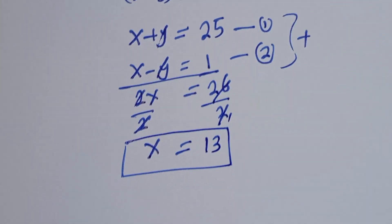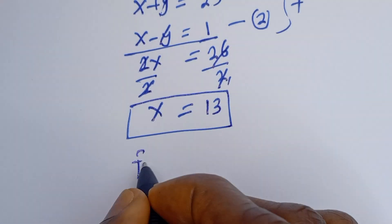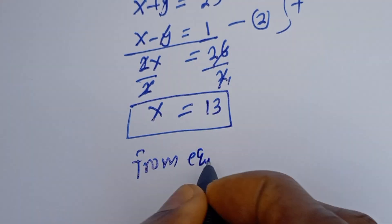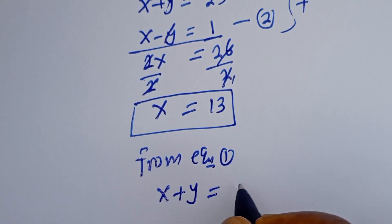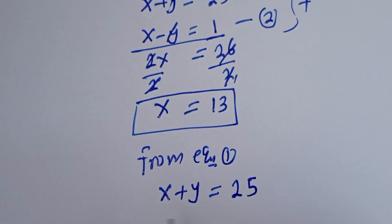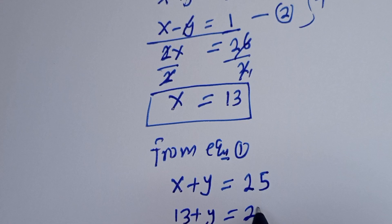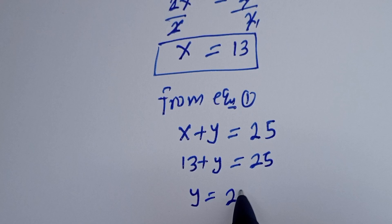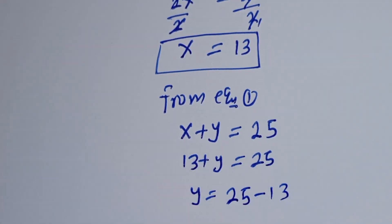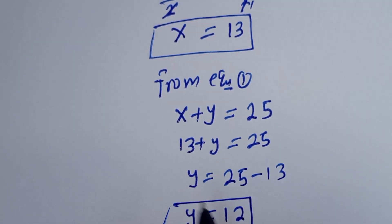If we want to find the value of Y, we use either equation 1 or 2, but I'm making use of equation 1. From equation 1, X plus Y equals 25. When X is 13, we have 13 plus Y equals 25. Now Y equals 25 minus 13, Y equals 12. This is the value of Y.